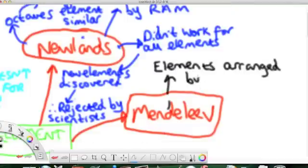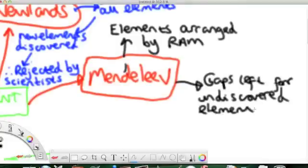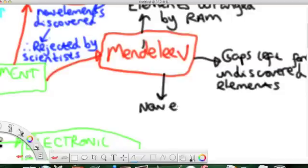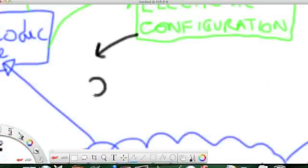Now, Mendeleev, also arranged by relative atomic mass, he also left gaps in the table, where he said there would be new discoveries that he hadn't discovered yet. And he also predicted the properties of those elements too.